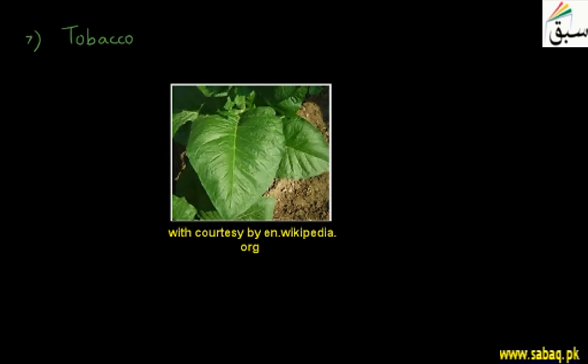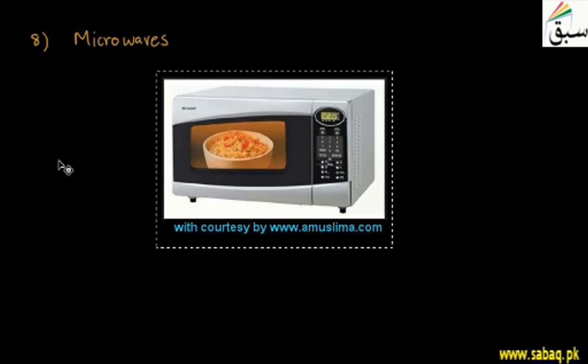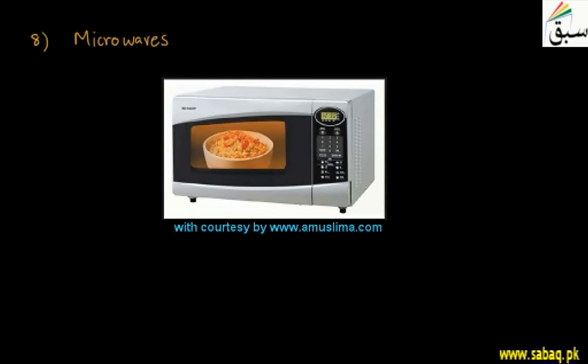The eighth source of radiation exposure is called microwaves. This is a very popular device used to heat food. You can see a picture of a microwave oven. Microwaves are produced inside it. Students, the microwaves are very limited in form and limited to the food being heated, which is why dehydration of food is reduced by microwaves.